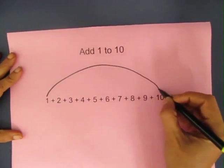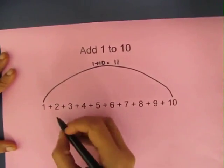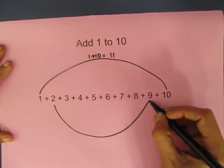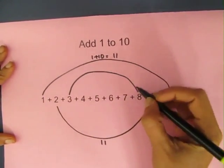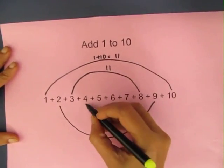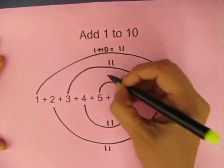If you look at the first and last digit, 1 and 10 add up to 11. 2 and 9 add up to 11 again. 3 and 8 add up to 11. 4 and 7 add up to 11, and 5 and 6 add up to 11.